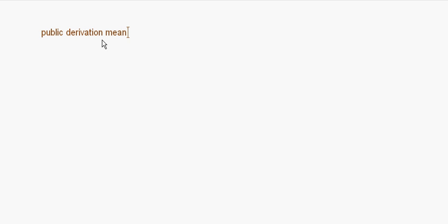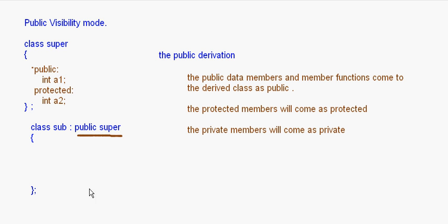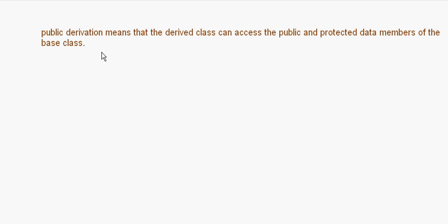This means the public derivation means that the derived class can access the public and protected data members of the base class. Because private — when private comes down as private — that means private is never accessible to a derived class. Private is something which is accessible only within that class. So the public and protected data members will be accessible in the derived class. That is what public derivation is.